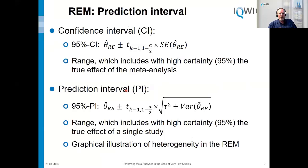It is important to know the difference between the confidence interval and the prediction interval. The confidence interval is a range which includes with high certainty the true effect of the meta-analysis, and conclusions about whether there is an intervention effect should be based on it. The prediction interval is a range which includes with high certainty the true effect of a single study, and is the graphical illustration of heterogeneity within the random effects model — useful for understanding heterogeneity, not for the true effect.